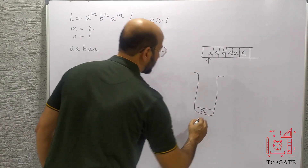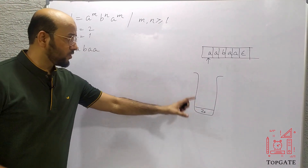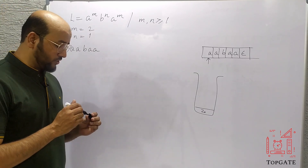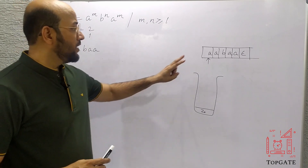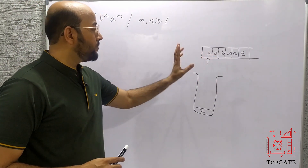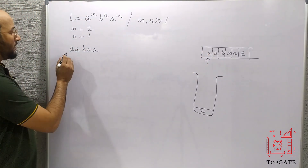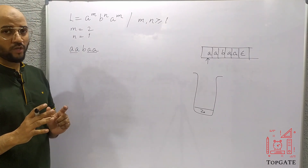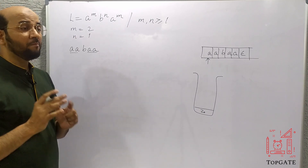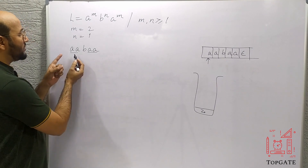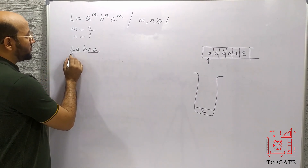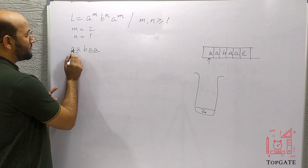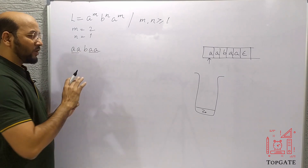Now let me discuss the logic. The PDA cannot easily count things, but it can compare. The logic is: push all the A's that come before the B's into the stack. So we push this A, push this A into the stack. When the B comes, we simply bypass it — skip it entirely.